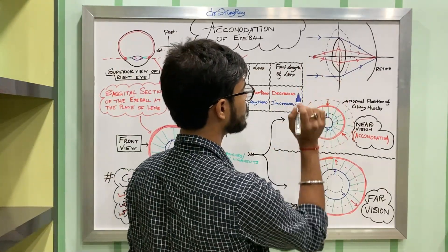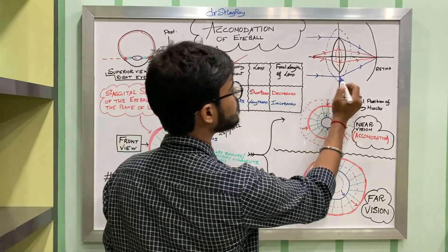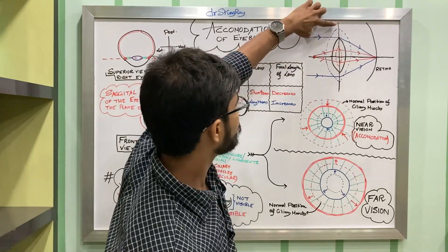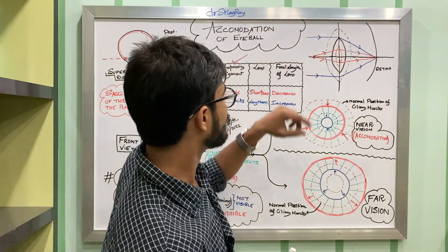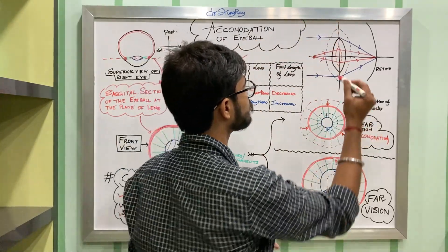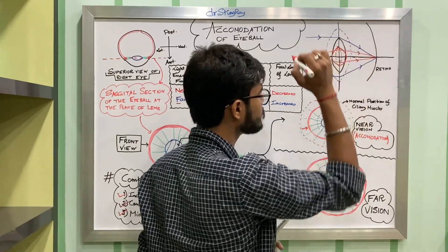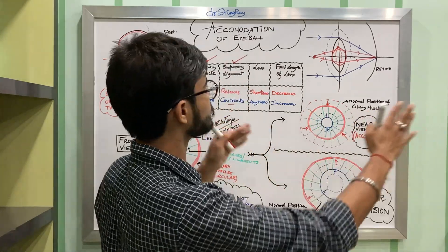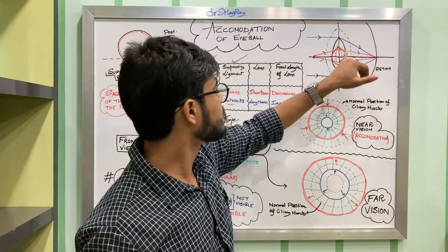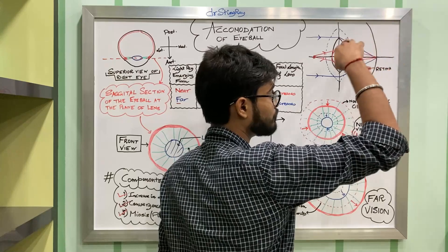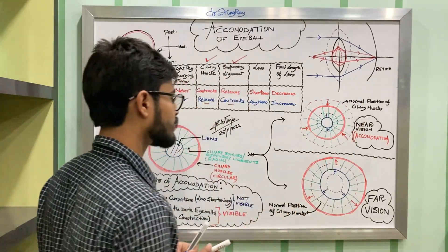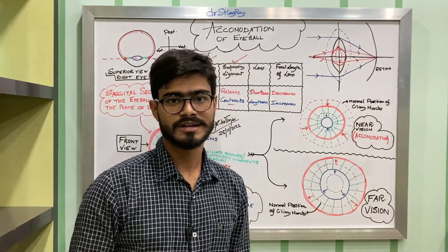For a faraway object, rays coming from infinity meet at the retina when the lens is lengthened and focal length is increased. For a nearby object, shown in red, the lens shortens, focal length decreases, and the diverging rays converge more strongly to meet the retina. Without this accommodation, the rays would meet behind the retina, leading to hypermetropia — which will be covered in another video. Please like, share, and subscribe. Thank you.